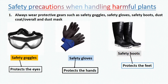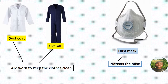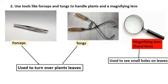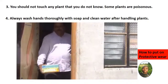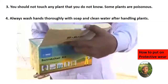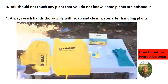1. Always wear protective gear such as: safety goggles, which protect the eyes; safety gloves, which protect the hands; safety boots, which protect the feet; a dust coat or overall, which keeps the clothes clean; and a dust mask, which protects the nose. 2. Use tools like forceps and tongs to handle plants, and a magnifying lens. Forceps and tongs are used to turn over plants' leaves. A magnifying lens, also known as a hand lens, is used to see small holes on leaves. 3. Do not touch any plant that you do not know — some plants are poisonous. 4. Always wash hands thoroughly with soap and clean water after handling plants.